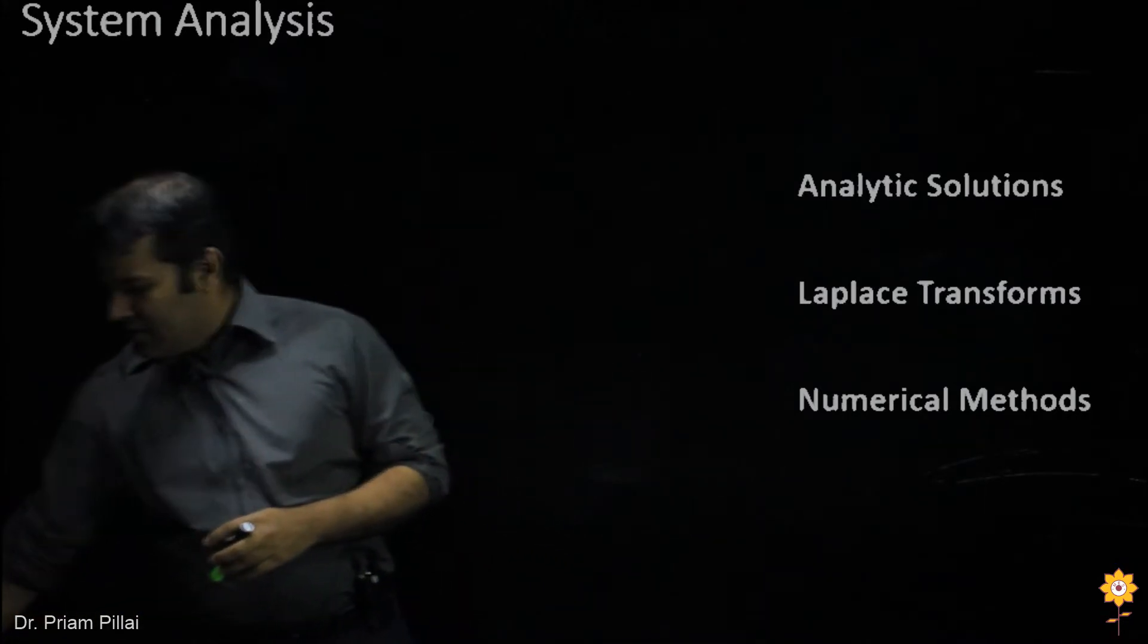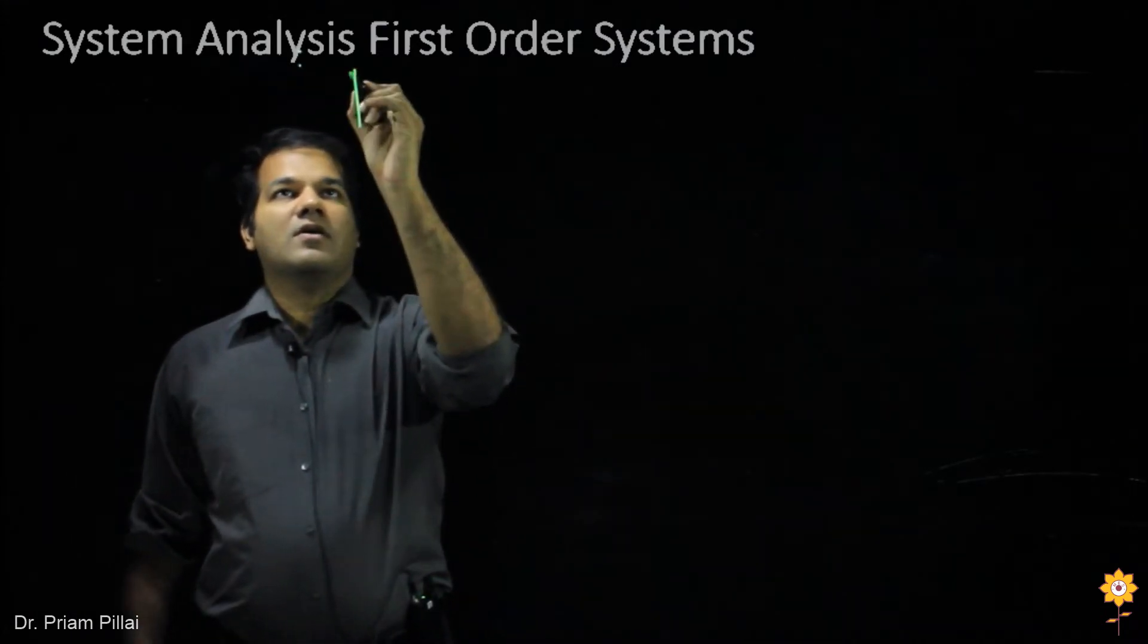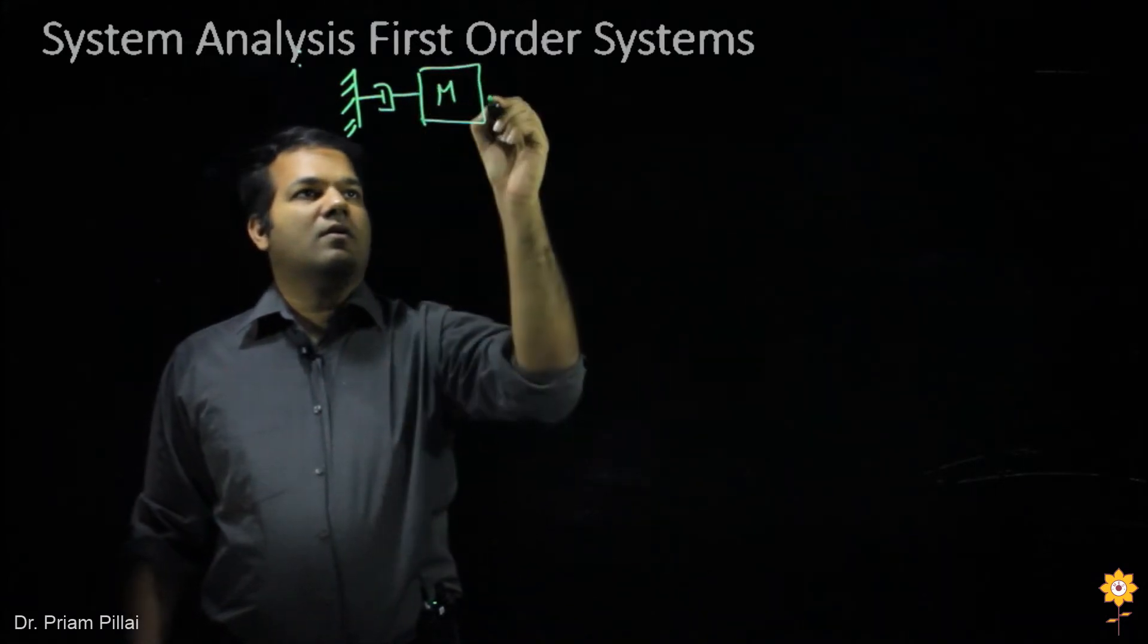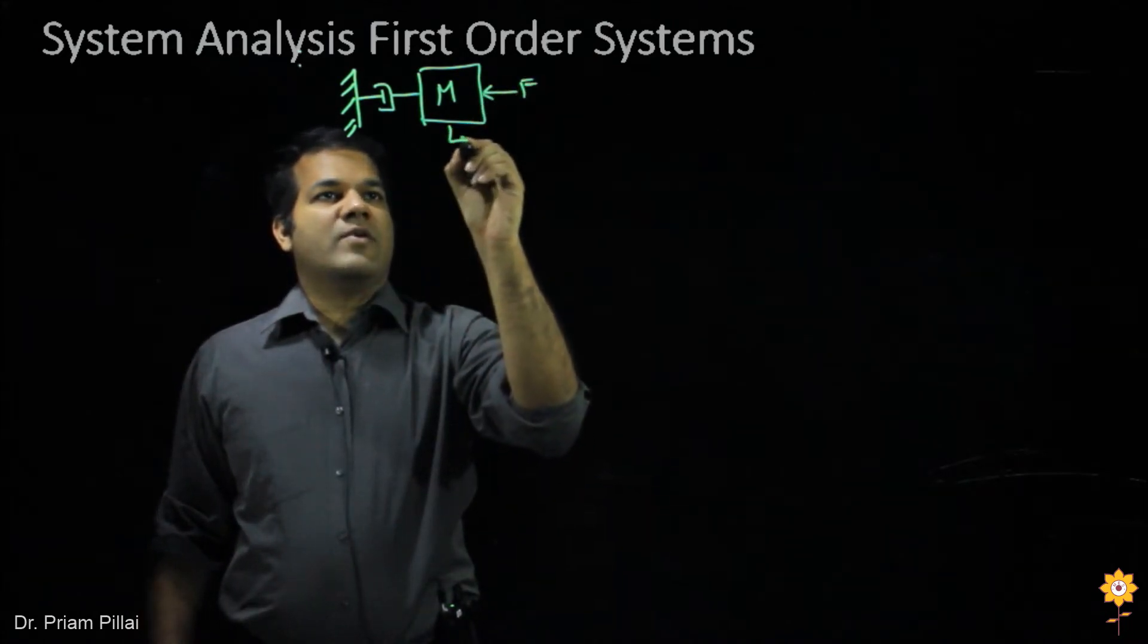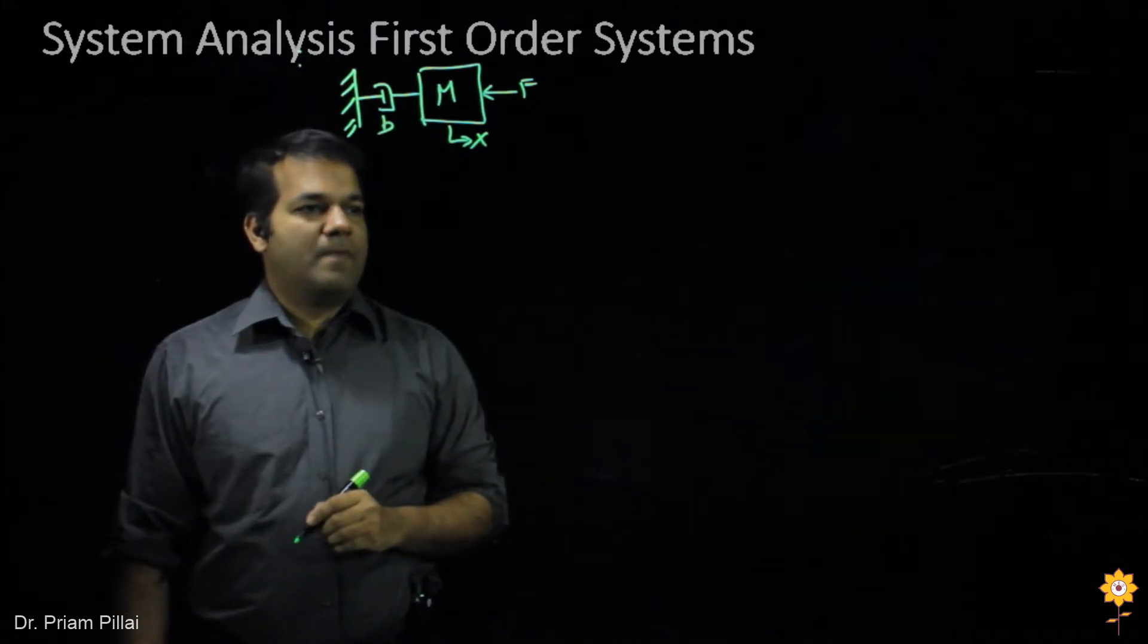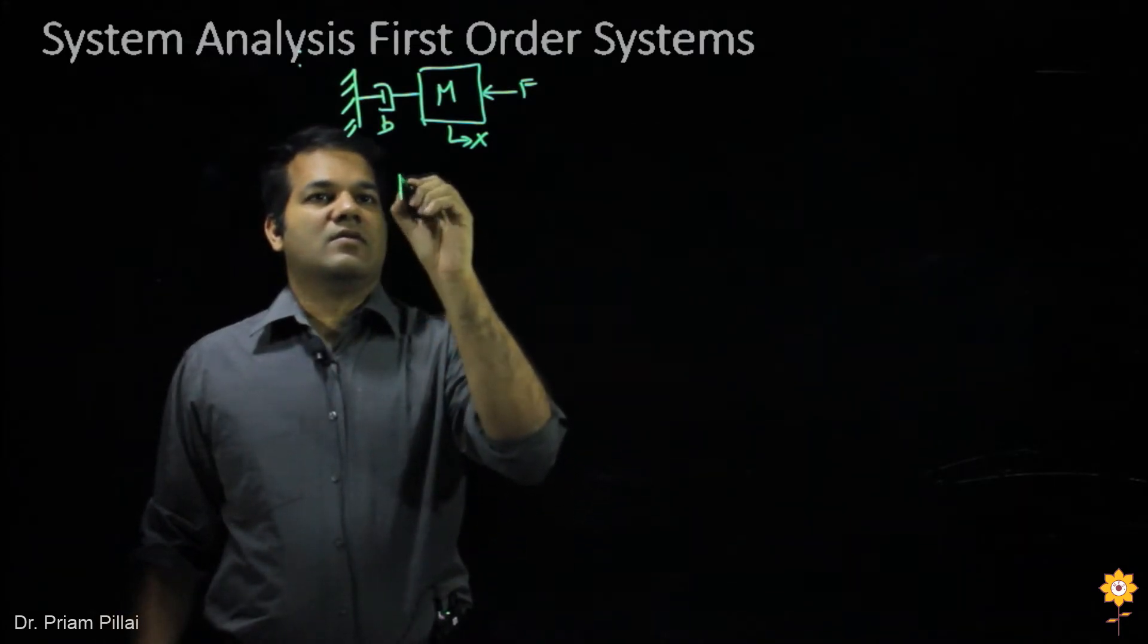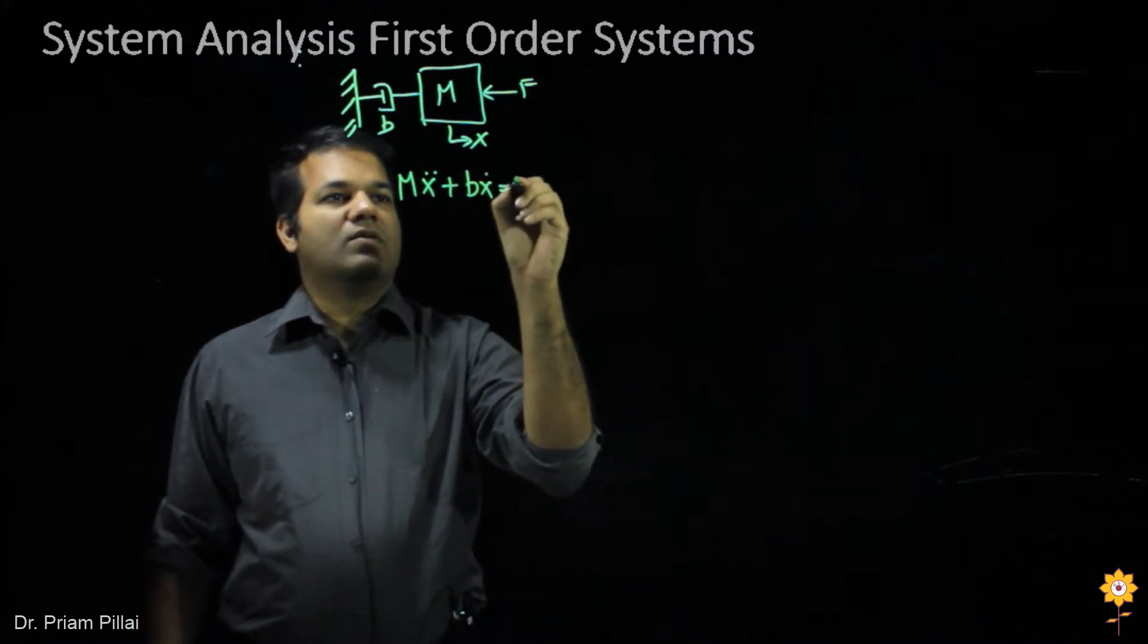Let's start by considering a simple first-order system, a system that has a dashpot and a mass. Let me apply some external force F and we measure its position X. It has a damping B. We can do a free body diagram like we did before and we would end up getting an equation that looks like this: Mx double dot plus Bx dot equals F.